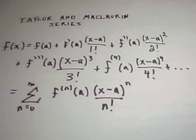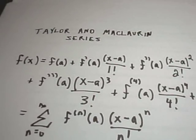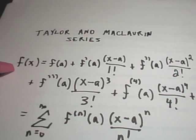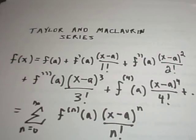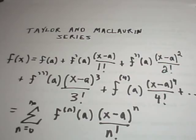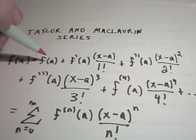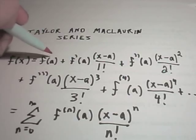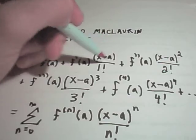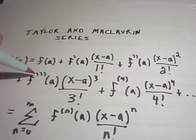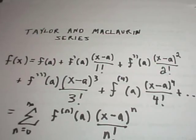In this video we're going to talk about Taylor and Maclaurin series. The idea is that in certain cases you can rewrite a function f(x) in terms of an infinite sum of other functions. The general formula centers the expansion at some value a, giving: f(a) plus f'(a) times (x minus a) over 1 factorial, plus f''(a) times (x minus a) squared over 2 factorial, and so on — the derivatives, powers, and factorials all keep increasing.